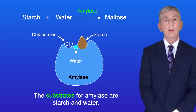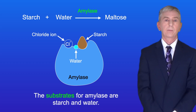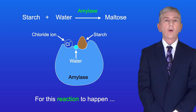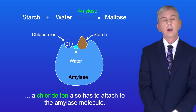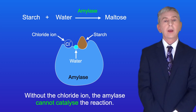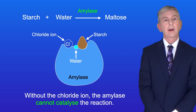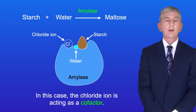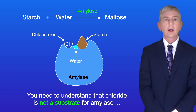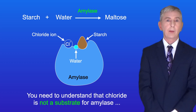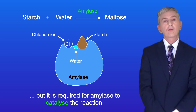So the substrates for amylase are starch and water. Now for this reaction to happen, a chloride ion also has to attach to the amylase molecule. And without the chloride ion, the amylase cannot catalyze the reaction. So in this case the chloride ion is acting as a cofactor. Chloride is not a substrate for amylase, but it's required for amylase to catalyze the reaction.